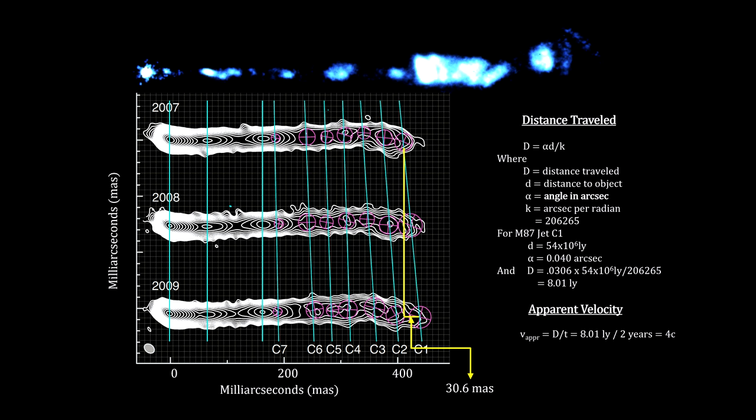We call the apparent velocities greater than the speed of light superluminal motion. Here's how it works.